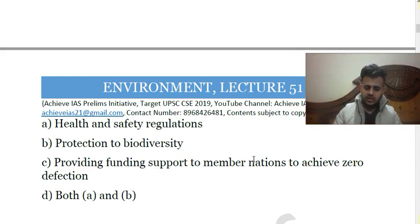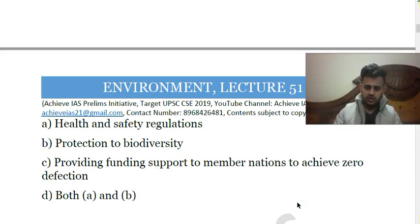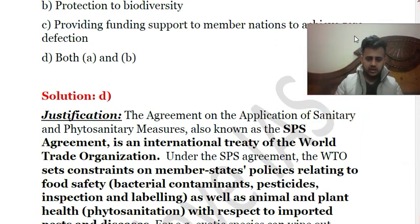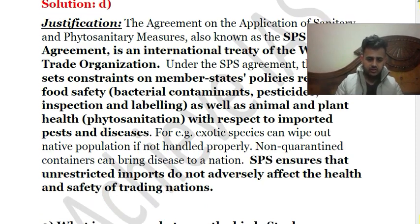Essentially, SPS measures regulate trade in commodities not listed in the restricted communities banned for international trade. It is a kind of standard that every country must meet before exporting a particular commodity. It relates to health and safety regulations and also the protection of biodiversity. Under this agreement, WTO sets constraints on member states' policies relating to food safety, bacterial contaminants, pesticides, inspection, labeling, as well as animal and plant health — phytosanitation — with respect to important pests and diseases.